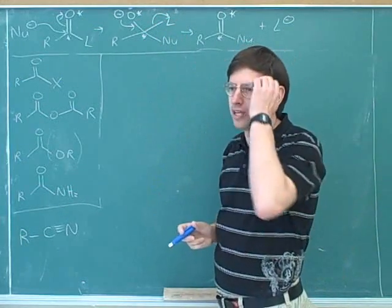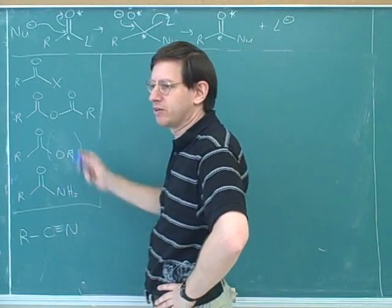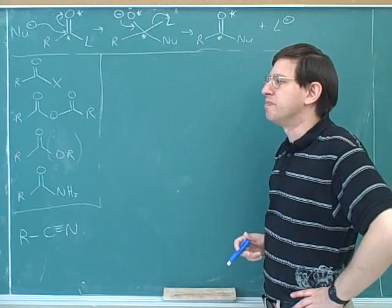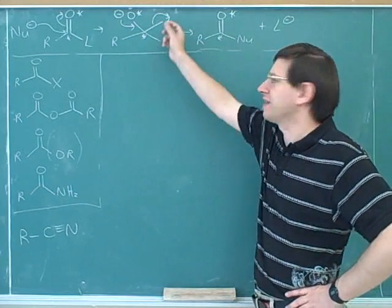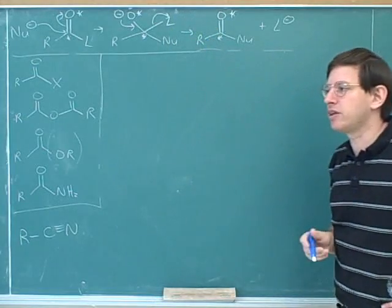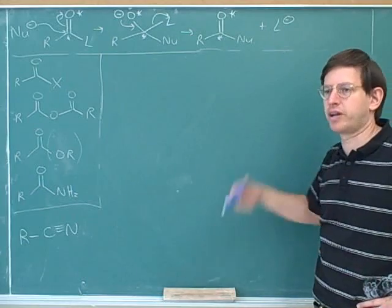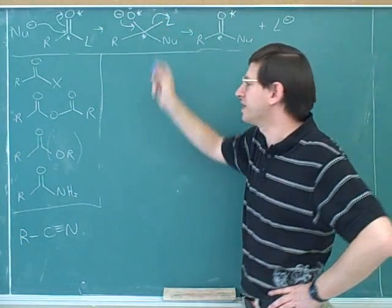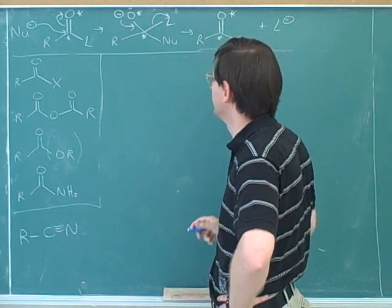L here basically stands for leaving group. All of these are similar because they all have possible leaving groups. This can't happen in an aldehyde or ketone because the L group there would have to be a hydrogen or a carbon — and those can't be leaving groups, so you can't reform the carbonyl. If you look at the four categories of aldehydes and ketones, we never reform the carbonyl there because there's no acceptable leaving group. But here we do have acceptable leaving groups, so the L group can leave and we can reform the carbonyl.